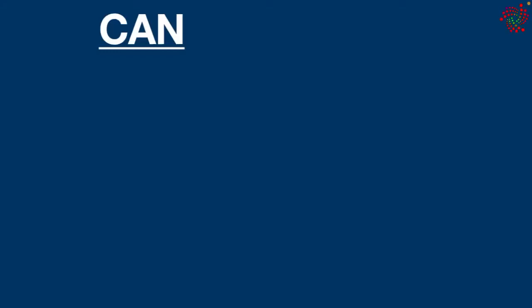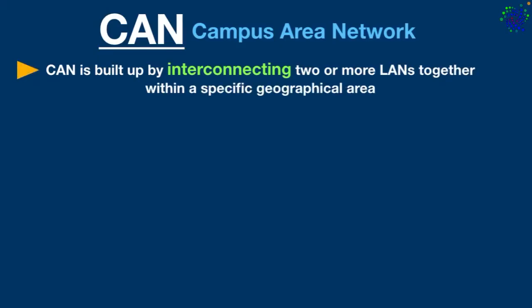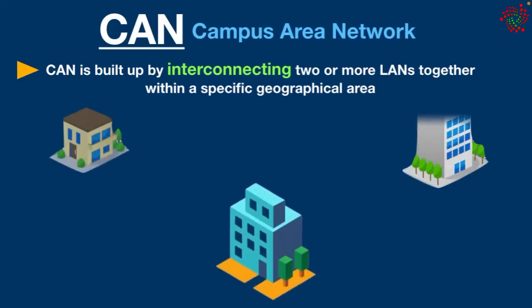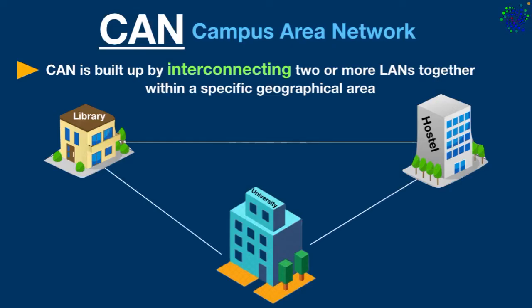The next network type is CAN. CAN stands for Campus Area Network. It is built by interconnecting two or more LANs together within a specific geographical area. For example, a university campus can be linked with a variety of campus buildings to connect all the departments.